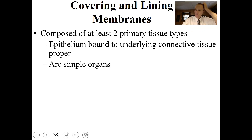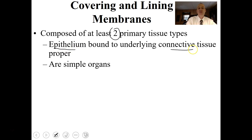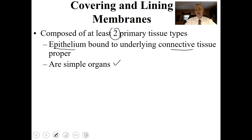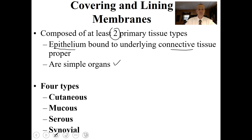Putting epithelial tissues and connective tissues together forms covering and lining membranes. A covering or lining membrane is composed of at least two primary tissues — epithelium and connective tissue bound together. Since these membranes are made of more than one type of tissue, they are considered simple organs, because by definition an organ is several different tissues working together to perform a function. There are four main types: cutaneous, mucous, serous, and synovial membranes.